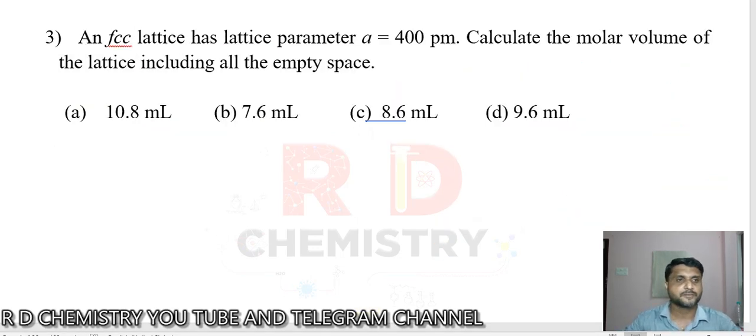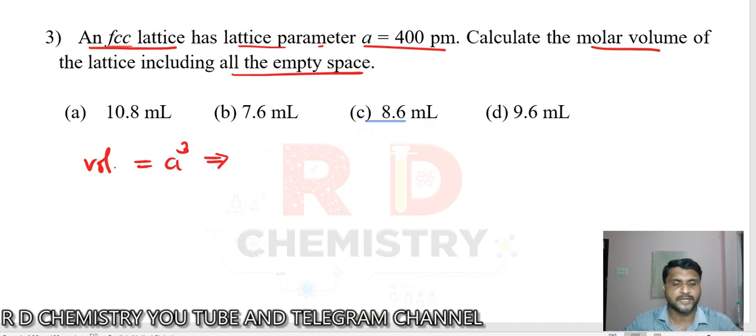Question number three: An FCC lattice has lattice parameter a = 400 pm. Calculate the molar volume of the lattice including all the empty space. How do you calculate volume? Volume is equal to side into side into side, a cube. I have to write in centimeters because it is ml.